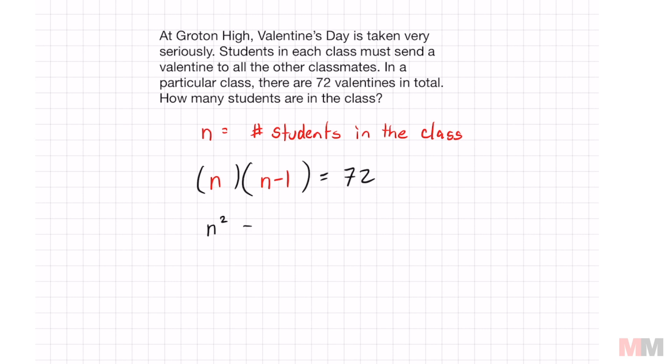Distribute that, you get n² - n = 72. Bring the 72 to the other side. Now I got a simple quadratic equation: n² - n - 72 = 0.